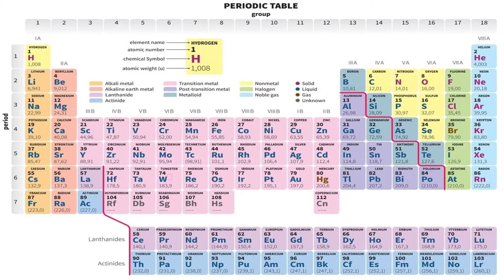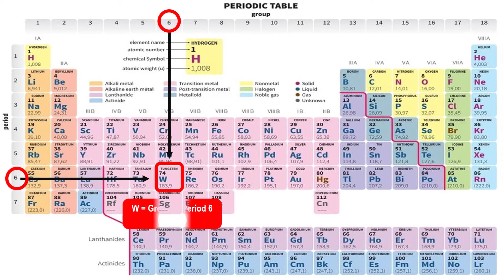Next, tungsten. It is located in group 6, period 6, or G6, P6.